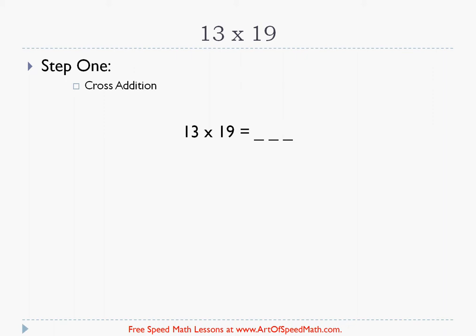So we got two numbers 13 times 19 and we're going to cross add. And what this means is we're going to take the 3 and we're going to add it onto the 19. Alternatively you could take the 9 and add it onto the 13. But either way you'll get 22. So 3 plus 19 or 9 plus 13 is 22. So this will be the start of your answer, 22. So that's step one and there's only one more step.